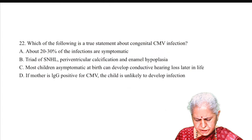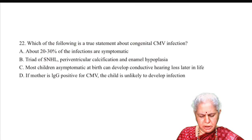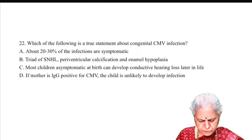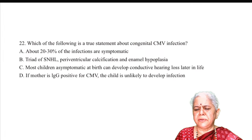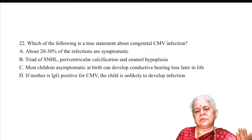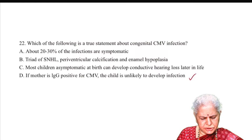Question on congenital CMV infection: which statement is true? Answer D: if the mother is IgG positive for CMV, the child is unlikely to develop infection — because IgG means past/old infection and she is unlikely to transmit it. IgM positive means recent infection, which carries risk of transmission. Most children are asymptomatic at birth but can develop sensorineural hearing loss later. Periventricular calcification is a feature of congenital CMV. Answer is D.